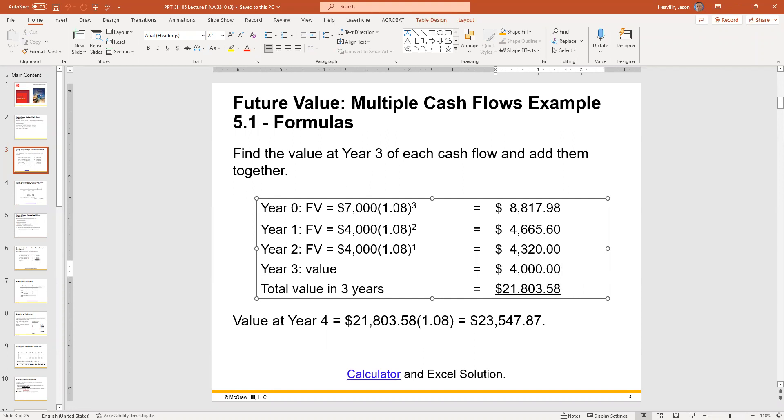And in the future, you will have $21,803.58. So to recap, you have $7,000 in the account growing at 8% for three years. A year goes by, you deposit $4,000, it's going to grow 8% for two more years. On the second year, you deposit another $4,000, and it's going to grow 8% for one year. And then you make a last deposit of $4,000.